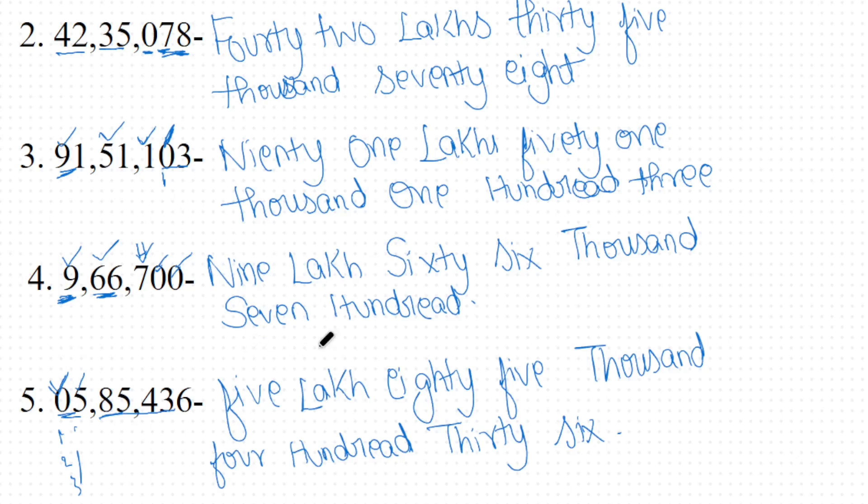Now you are able to understand all the number names. The one key thing to remember: don't ever, ever include 0. If there is a 0 in any position, leave it as it is — don't write a number name for 0. That applies for both the Indian system and the International system.